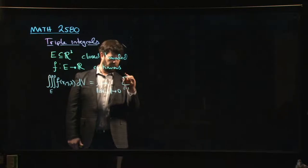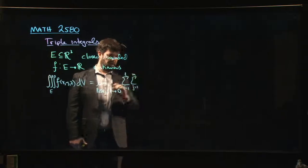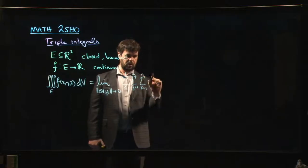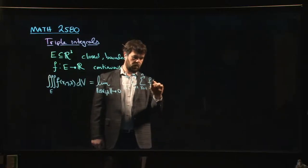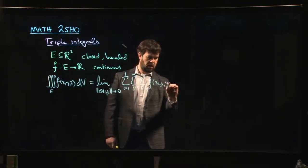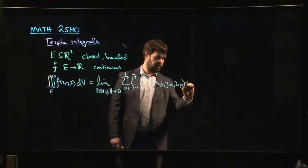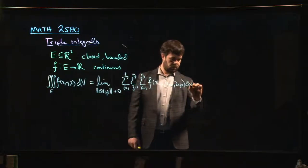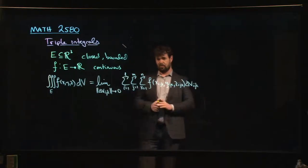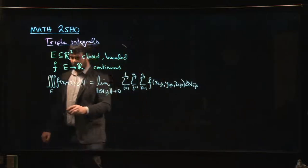And then we're going to have a sum. Let's say i going from one to L, j going from one to M, and k going from one to N. And then we're going to have something that looks like F of x_ijk, y_ijk, z_ijk, and then a ΔV_ijk. Some kind of mess like this, kind of analogous to what you have for a double integral, where you can probably guess what some of these ingredients are.